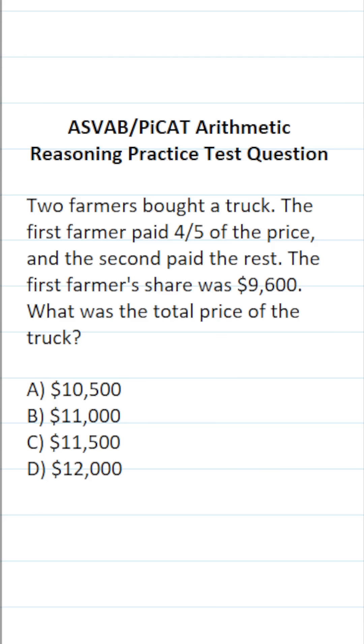We have to translate these statements into an equation that we can then solve. Let's start with this part right here. The first farmer paid four-fifths of the price, so that's going to be four-fifths. Of in math means multiply, so multiply the price of the truck. The total price of the truck is unknown, so I'm going to call that X. And then it says the first farmer's share was, was is going to be equal $9,600.